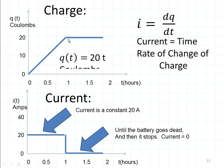What happens after one hour when the battery goes dead like this? Is there any slope to that line? Nope. The derivative or the slope of that line is zero, so the current is zero. So the current is a constant 20 amps until the battery goes dead, and then it stops and the current is zero.